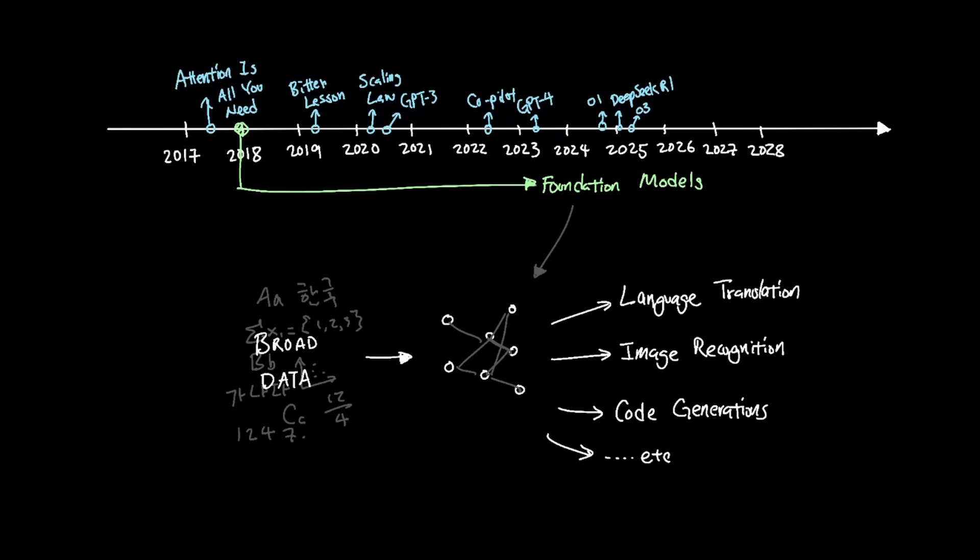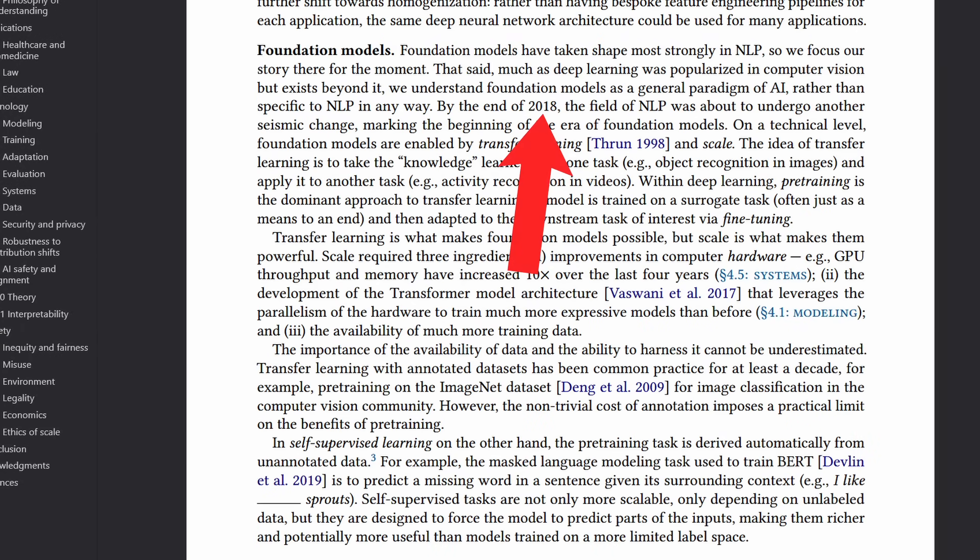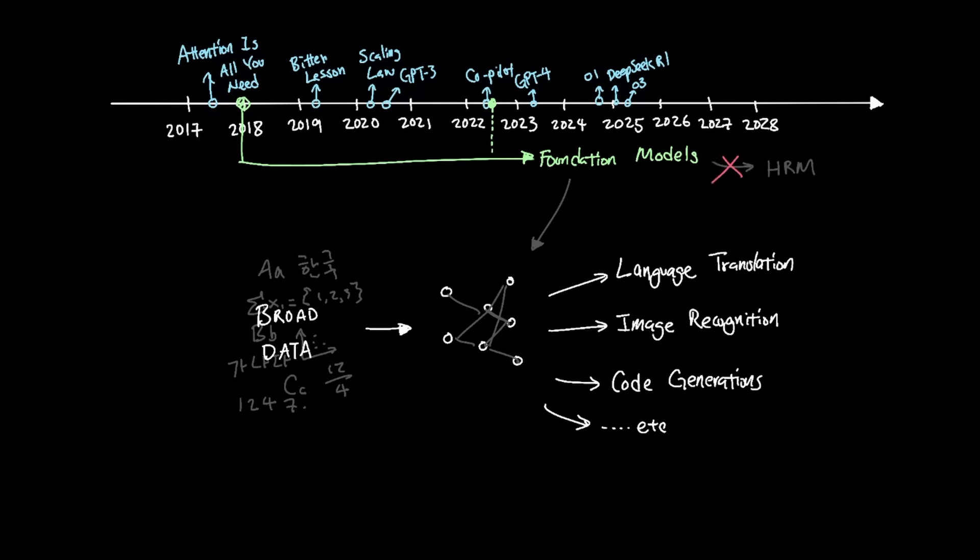And this concept of foundation model was coined back in July 2022 in a research paper that stated that 2018 was when we entered into an era of foundation models in AI. So by definition, HRM is not a foundation model because it misses two critical things: broad data and transfer learning.